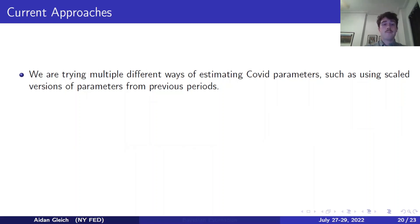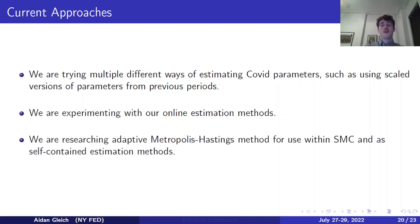Some of the approaches we're taking at the moment: we are trying multiple different ways of estimating COVID parameters, such as using scaled versions of parameters from previous periods. We are experimenting with our online estimation methods. I ran a whole suite of estimations, thousands of estimations, testing different setups for online estimations. So going from 2019, halfway through COVID, stopping, then continuing onward, going up through COVID, stopping halfway, continuing on, so on and so forth, to try to figure out where exactly our online estimation methods are going wrong to see if we can better pinpoint the cause so that we don't have to be estimating from 2019 onwards each time. We are also researching more adaptive MH methods for use both within sequential Monte Carlo, as well as self-contained estimation methods.